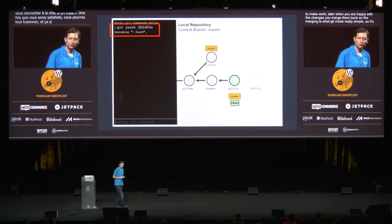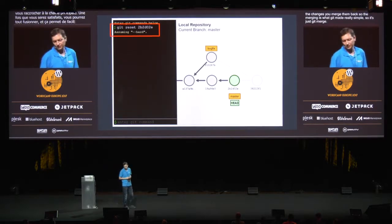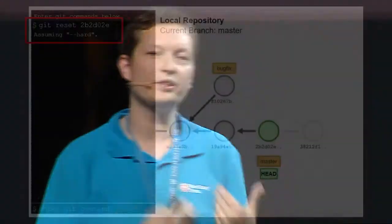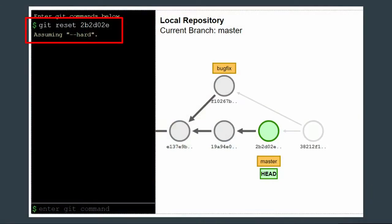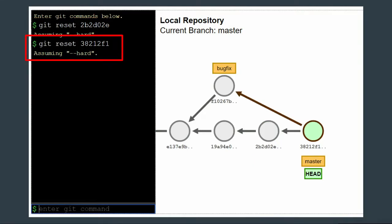Another useful command is git reset, which enables you to go to any point in history. You can go back — like in this case, if the merge didn't work, you simply reset to the previous state. You can also go forward. So whatever was tracked in Git, you can jump to — you can jump to 14 years ago, or to yesterday, to any state really.